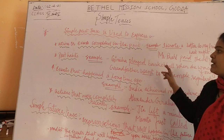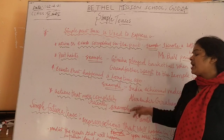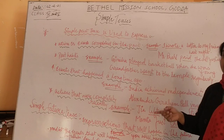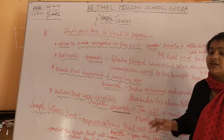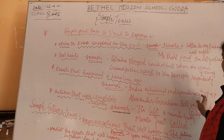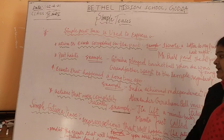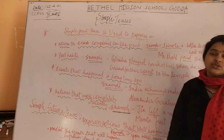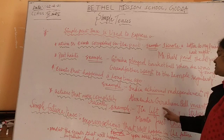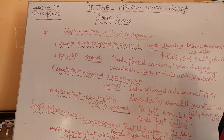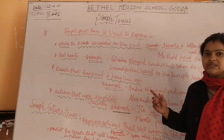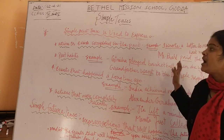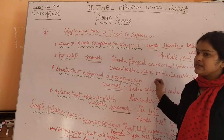Events that happened a long time ago: past tense is used to show events that happened a long time ago. For example, India achieved independence in 1947 — that is in the past time. Alexander Campbell invented the telephone in 1876, which is the past tense. So all these things and events are shown in simple past tense.